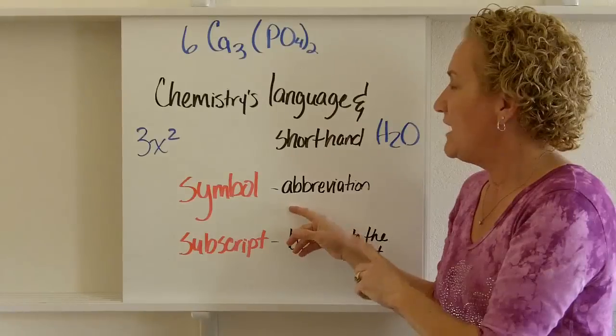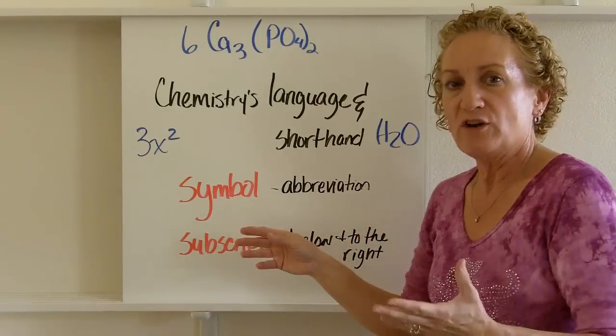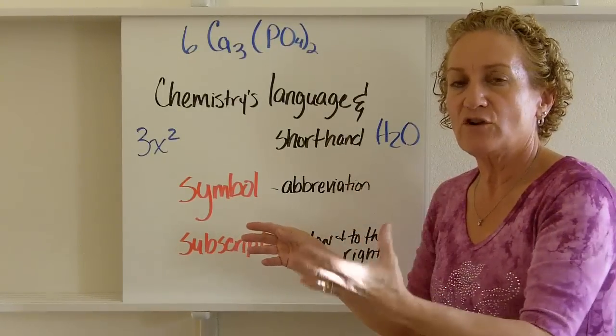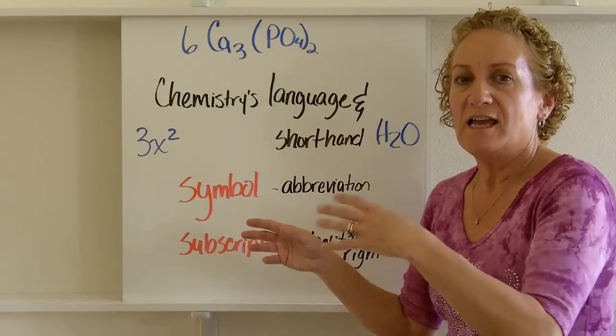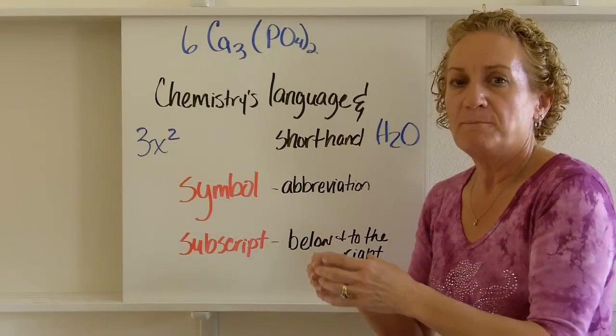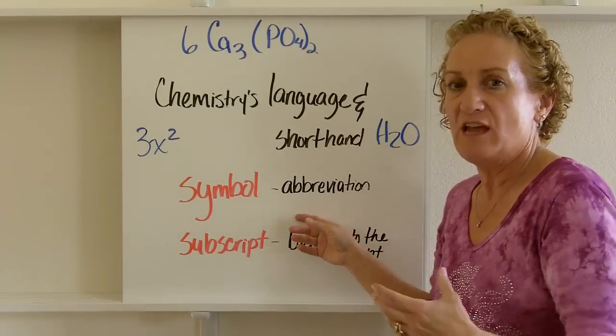The first thing you need to know is every element has a symbol, one or two letters. If it's two letters, the first letter is always uppercase, the second letter is always lowercase. It not only needs to be lowercase, it needs to look lowercase. And that's the symbol. That's an abbreviation.